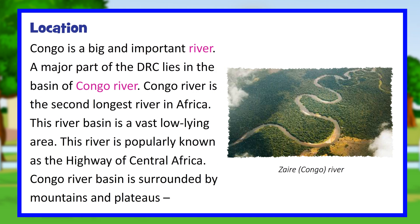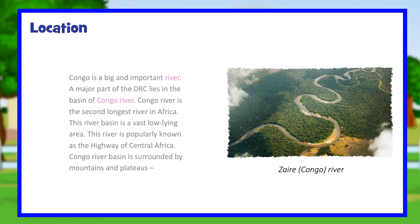Congo is a big and important river. A major part of the DRC lies in the basin of the Congo River, which is the second longest river in Africa. This river basin is a vast low-lying area, and the river is popularly known as the highway of Central Africa. The Congo River basin is surrounded by mountains and plateaus.